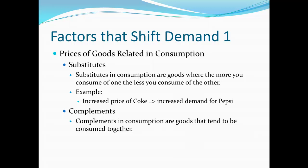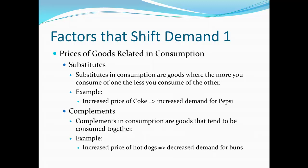With substitutes, it's not that we never consume them together — it's just that on average, the more you consume of one, the less you tend to consume of the other. With complements, if the price of hot dogs increases, that tends to decrease the demand for hot dog buns. If hot dogs become more expensive, I won't eat as many hot dogs, so I don't need the buns and I'm not willing to pay as much for them. So demand for buns decreases.